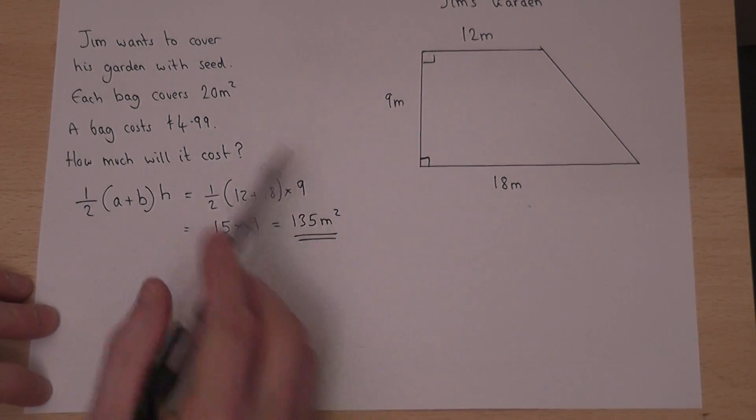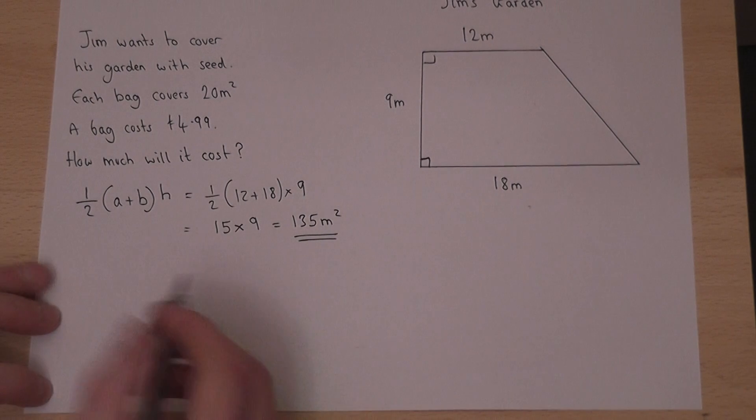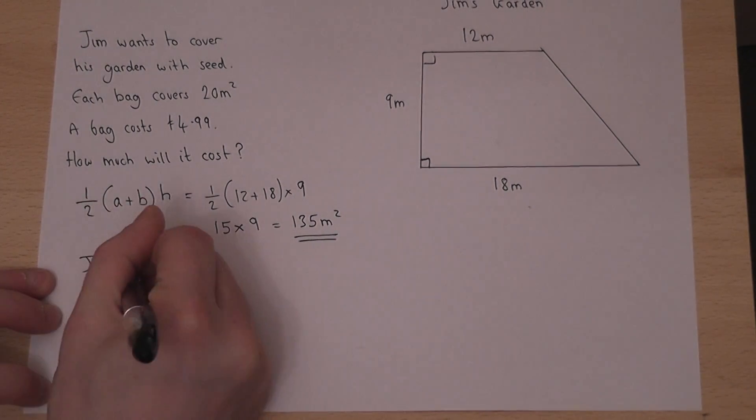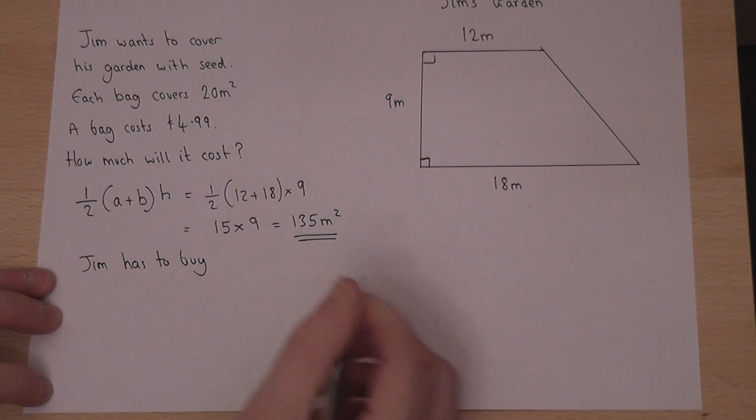Now each bag covers 20 meters squared, so Jim has to buy seven bags because seven times 20 is 140.